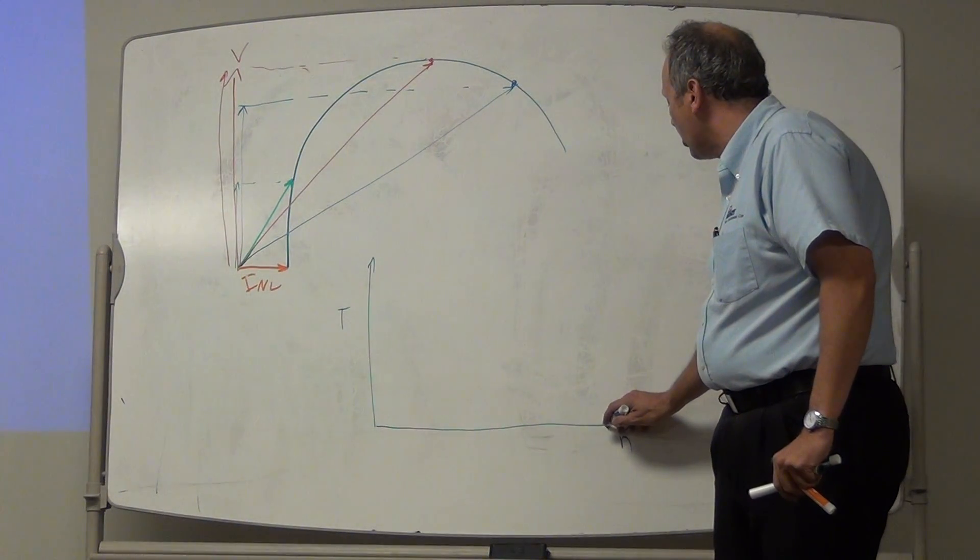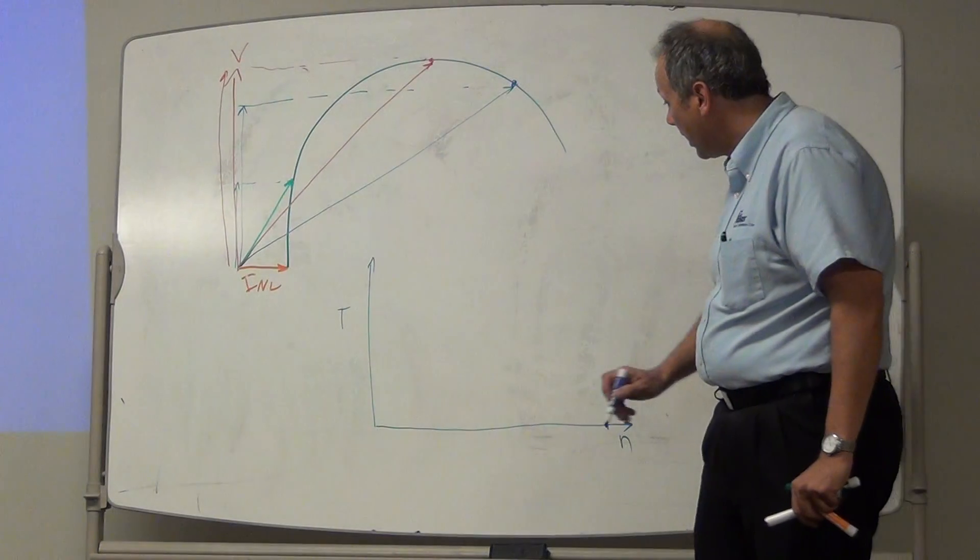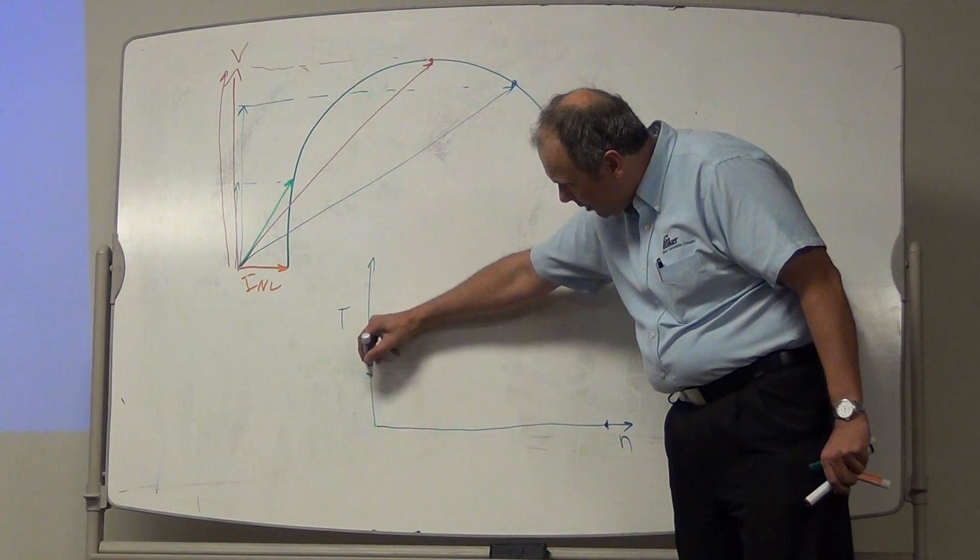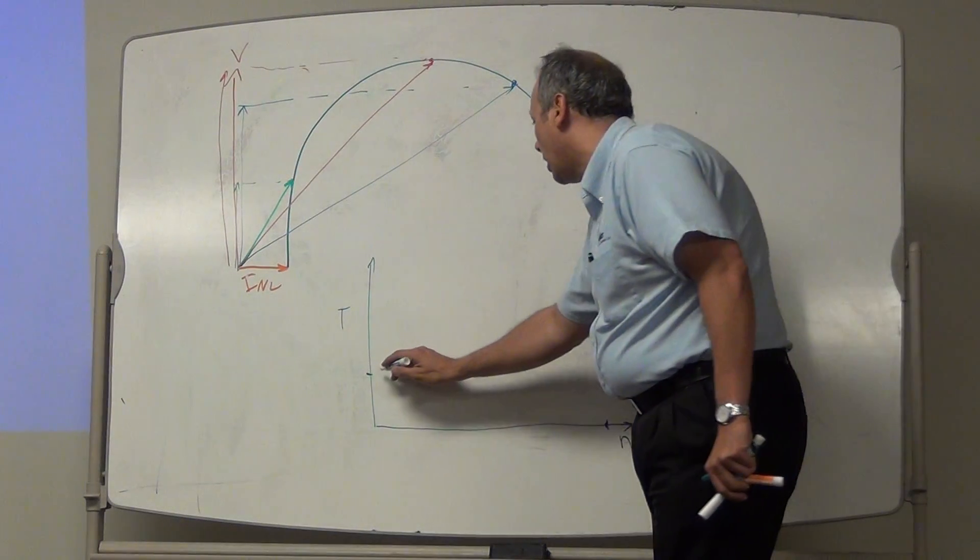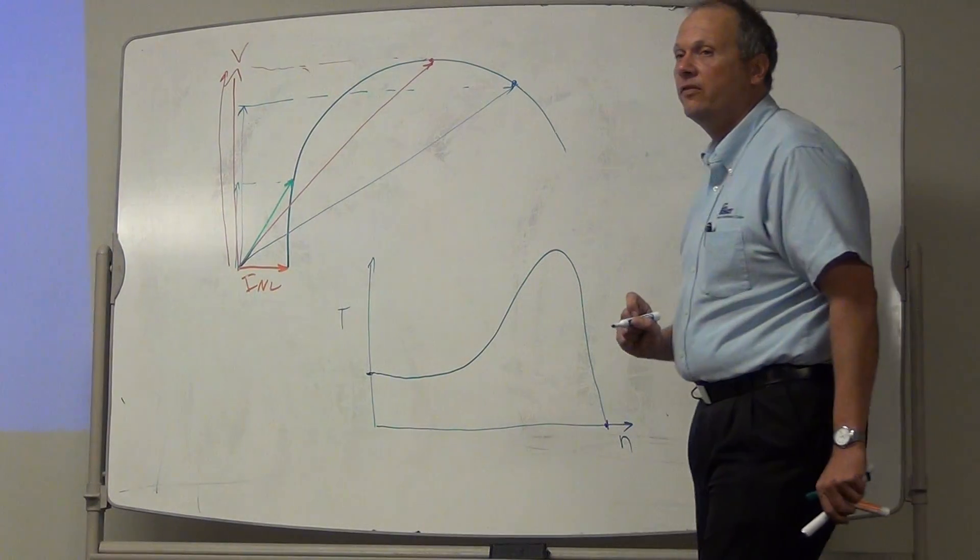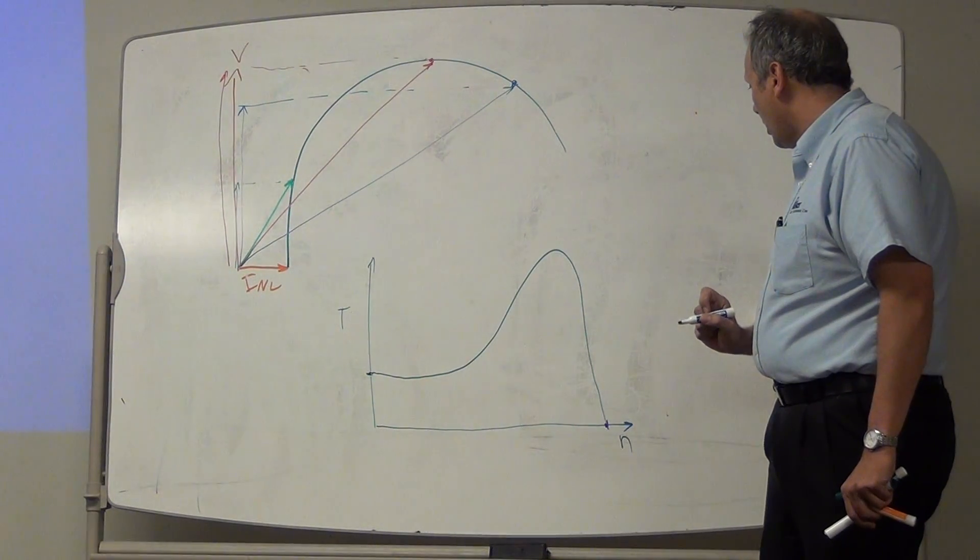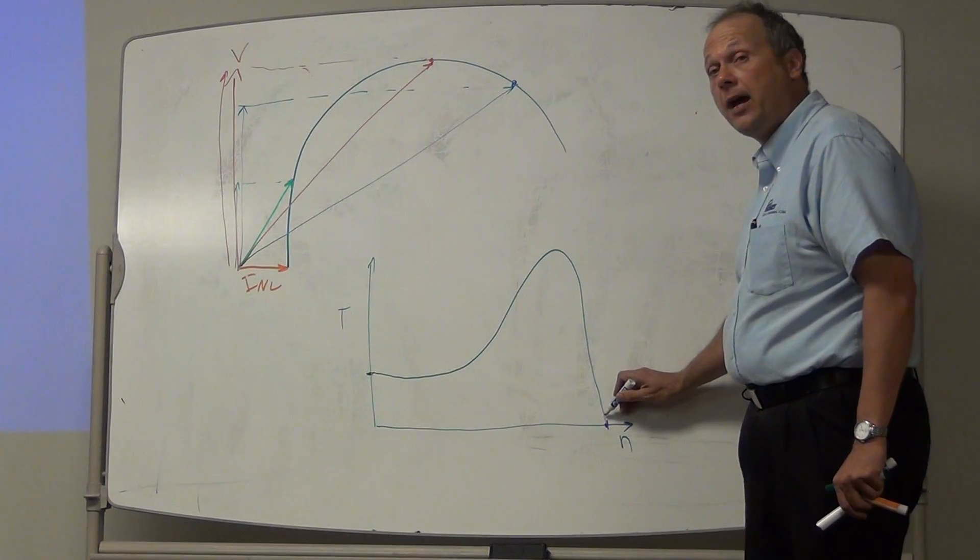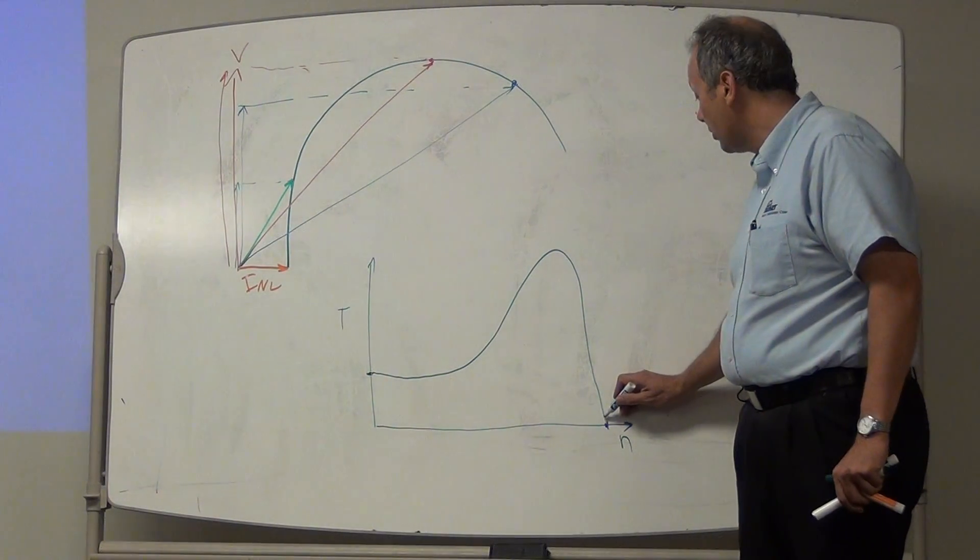I know that at synchronous speed, I have zero torque. I know that I have a certain start-up torque. Let's just draw a number right here. And the way how the motors behave, they have this type of curve right here. This portion right here, that is a very good approximation to say that it's linear.